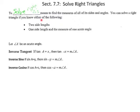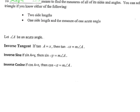We need two things to solve a right triangle. We need either two side lengths — use the Pythagorean Theorem to find the third — or we need one side length and a measure of one acute angle. Now let's talk about inverse sine, inverse tangent, and inverse cosine.